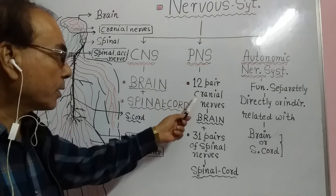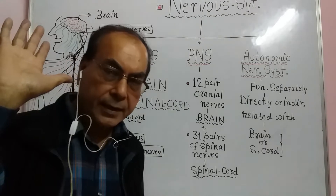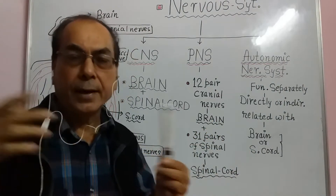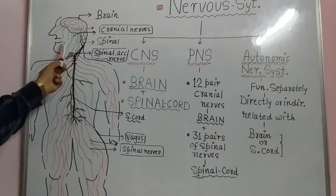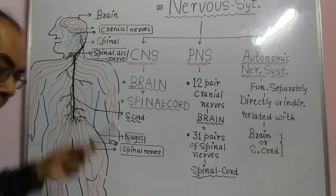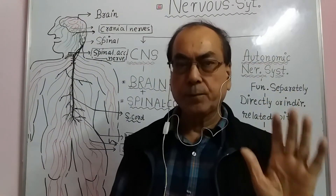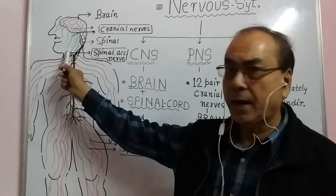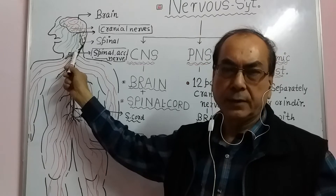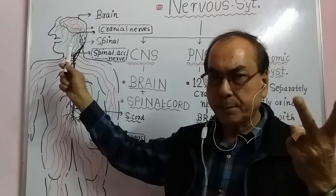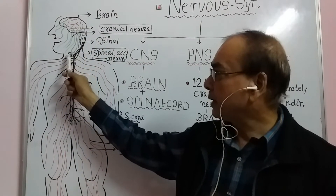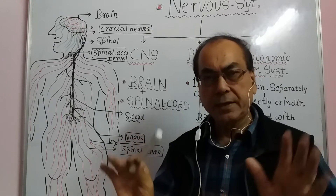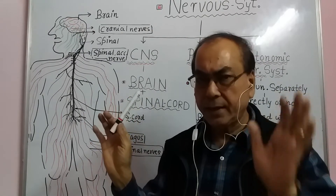We have 12 pairs of cranial nerves. These arise from the brain, shown here in green color. Out of these 12 pairs, 10 pairs stay only up to the head region and then end. Of the remaining two, one cranial nerve — the spinal accessory nerve — comes up to the neck region and ends there.